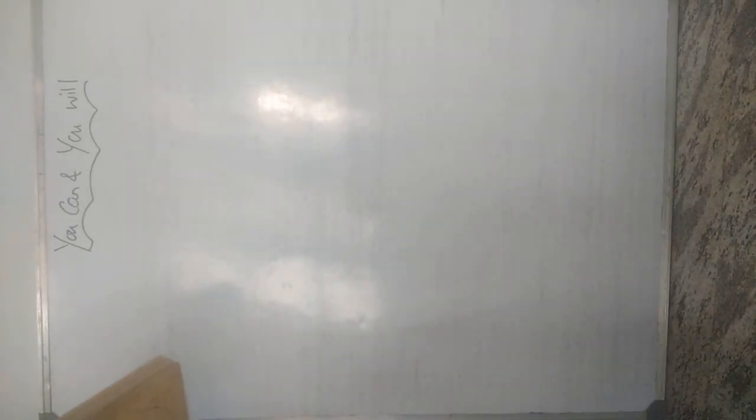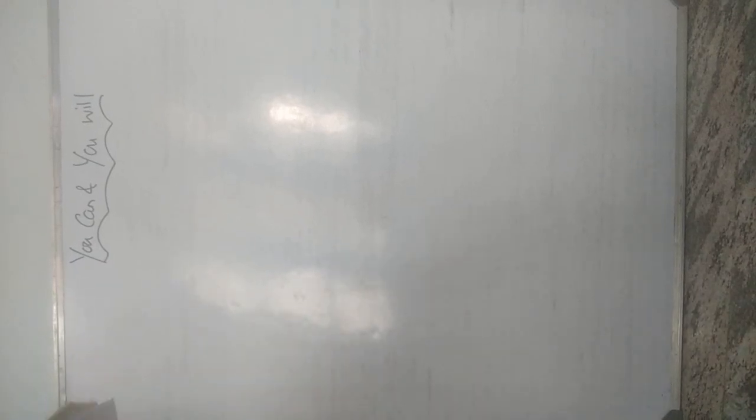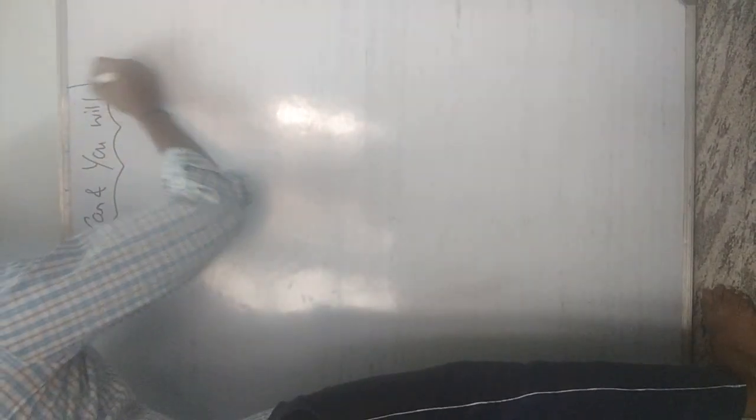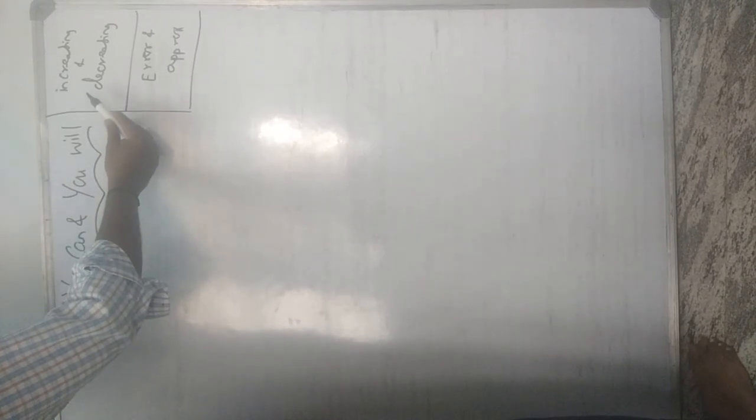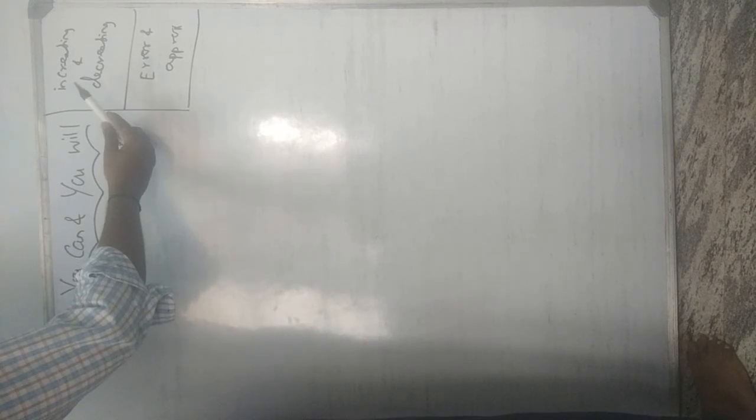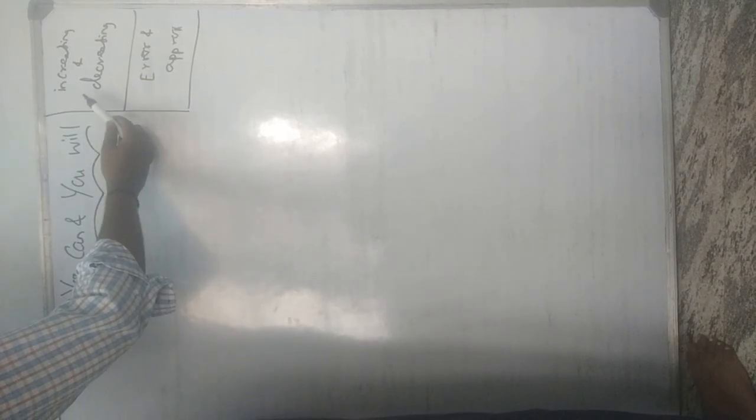Good afternoon to all. In the previous two videos I have taught you increasing and decreasing functions, then errors and approximations. As usual I will do a recap. Two days back I taught you increasing and decreasing functions. For the steps: find f'(x), put equal to zero to find the critical points, draw the number line, then divide the intervals and find the increasing or decreasing regions.